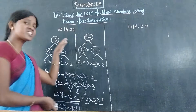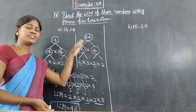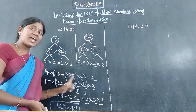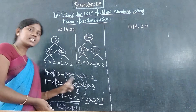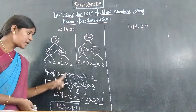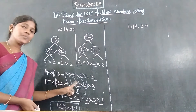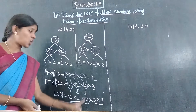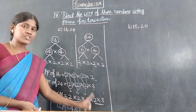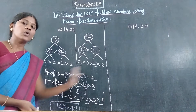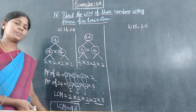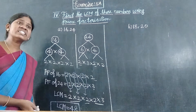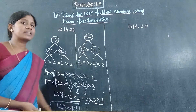So for 16 and 24, we wrote the prime factors, circled the common factors, struck the common numbers, and multiplied all. LCM equals 48.